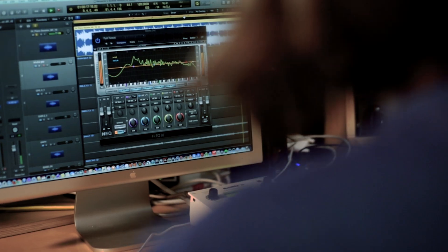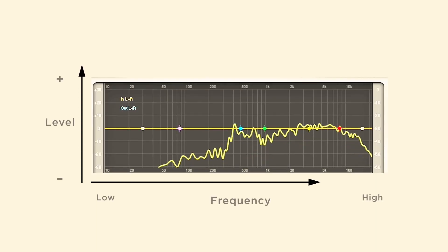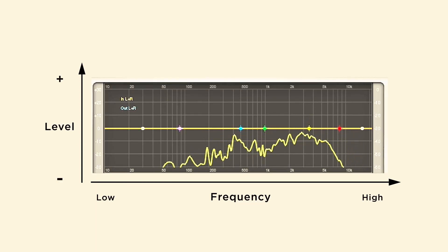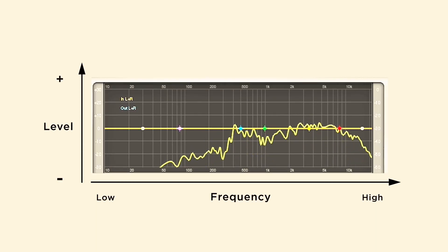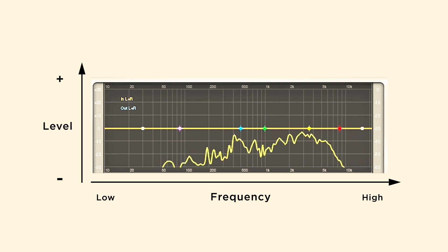Now back to music. Every instrument plays a certain range of frequencies that defines its sound and, along with other elements like timbre, distinguishes it from other instruments. I'm going to play you a few samples of different instruments and we're going to look at an EQ plugin called HEQ, which has a spectrum analyzer so you can see where the frequency range of each instrument lies. A spectrum analyzer is simply a graphical representation of the sound that we are hearing.